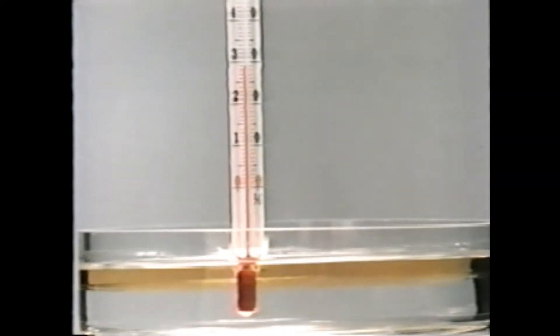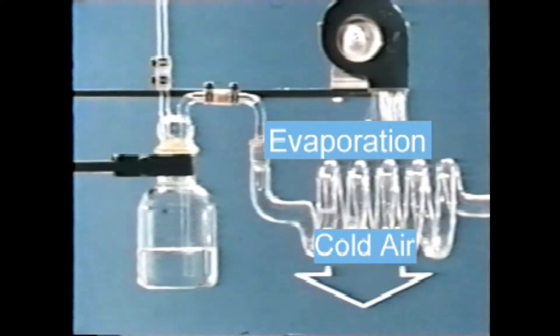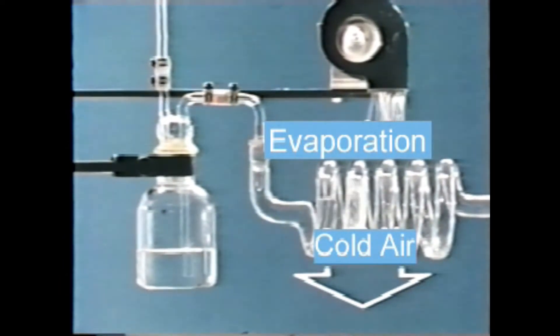But ethyl is not the only element that has this characteristic. Any substance on earth takes heat from the surrounding substance when it transforms itself from a liquid to a gaseous form. This characteristic of substances is applied to the refrigeration system.